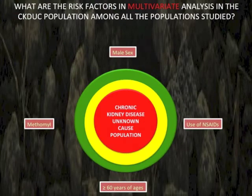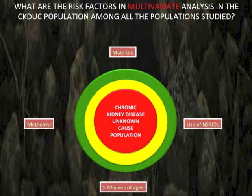What are the risk factors in multivariate analysis in the CKD of unknown causes population? The logistic model revealed that the probability of developing CKD-UC was significantly influenced by age, male sex, contact with agrochemicals such as metamil, and use of non-steroidal anti-inflammatory drugs.